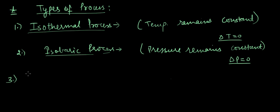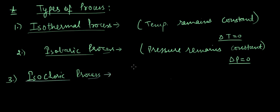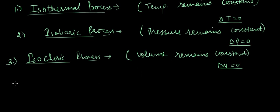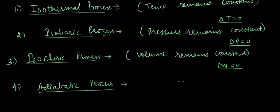Third is the isochoric process. In an isochoric process, the volume remains constant, or change in volume equals zero (ΔV = 0). Next is the adiabatic process — a process in which heat transferred equals zero (ΔQ = 0).